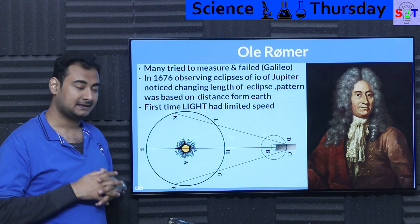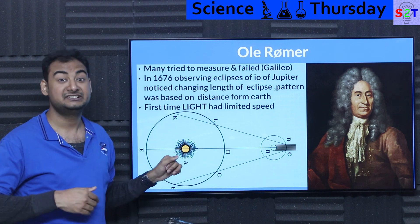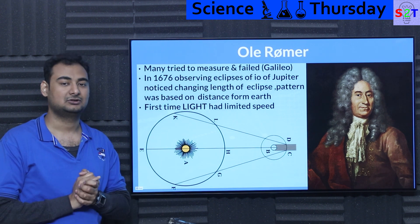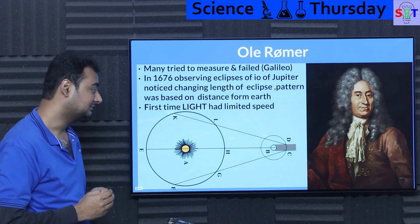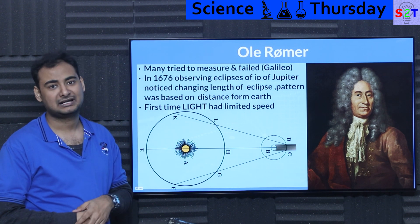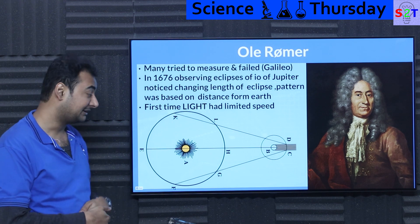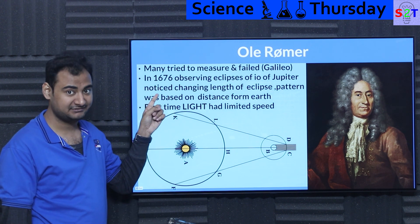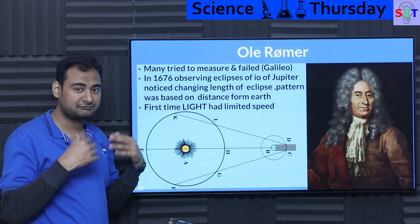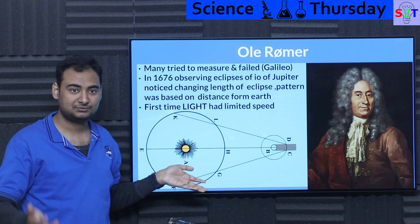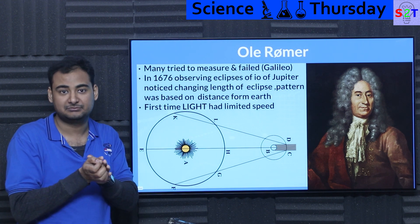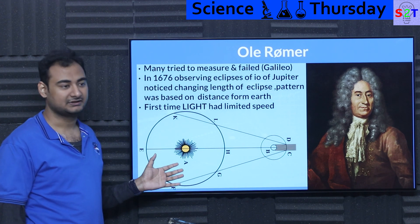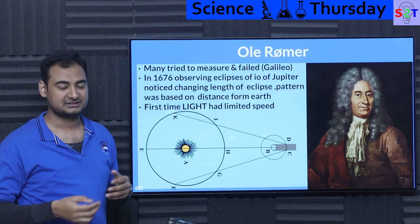Using Rømer's data, others tried to calculate the actual light speed, but the orbital measurements of Earth weren't precise enough at the time. The best result was around 200,000 kilometers per second, which is off by a fair amount. But this was 1676, and it was still quite good — it proved light has a finite speed. The experiment was repeatable: anyone with a telescope observing at the same positions could verify the data pattern. Anyone denying it at that point was ignoring solid evidence.